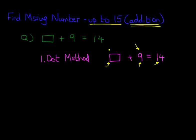9, 10, 11, 12, 13, 14. And now we stop. We've got to 14. How many dots have we drawn? Well, let's count them. We've got 1, 2, 3, 4, 5. We've got 5 dots. That's our answer. 5 plus 9 equals 14. So that is the dot method.